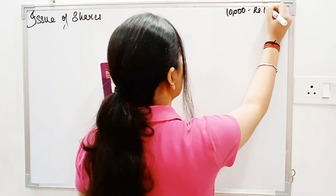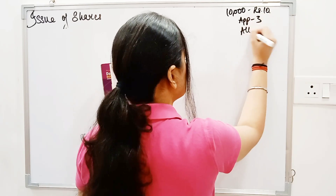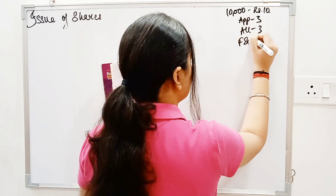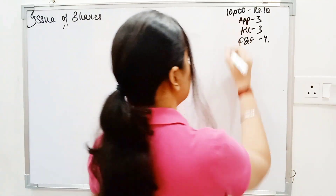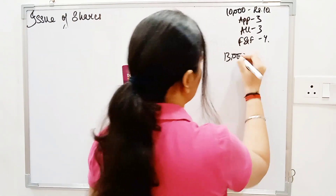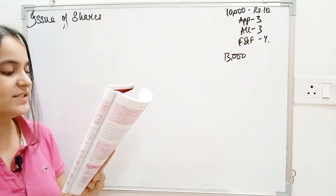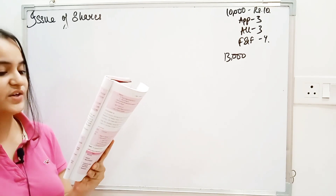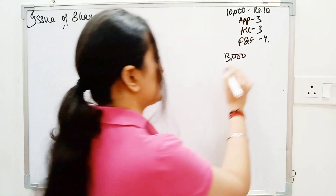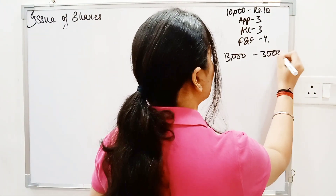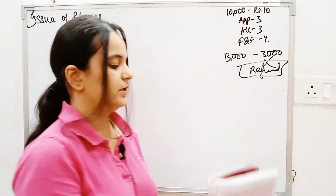Per share is rupees 10 — 3 on application, 3 on allotment, and 1st and final call of 4. After this, we received 13,000 applications, so this is the case of oversubscription. Now we have to decide whether to refund or prorate. The directors allotted shares to applicants demanding 5 or more shares and refunded the amount to applicants of 3,000 shares. Those applicants we have to reject and refund their money.